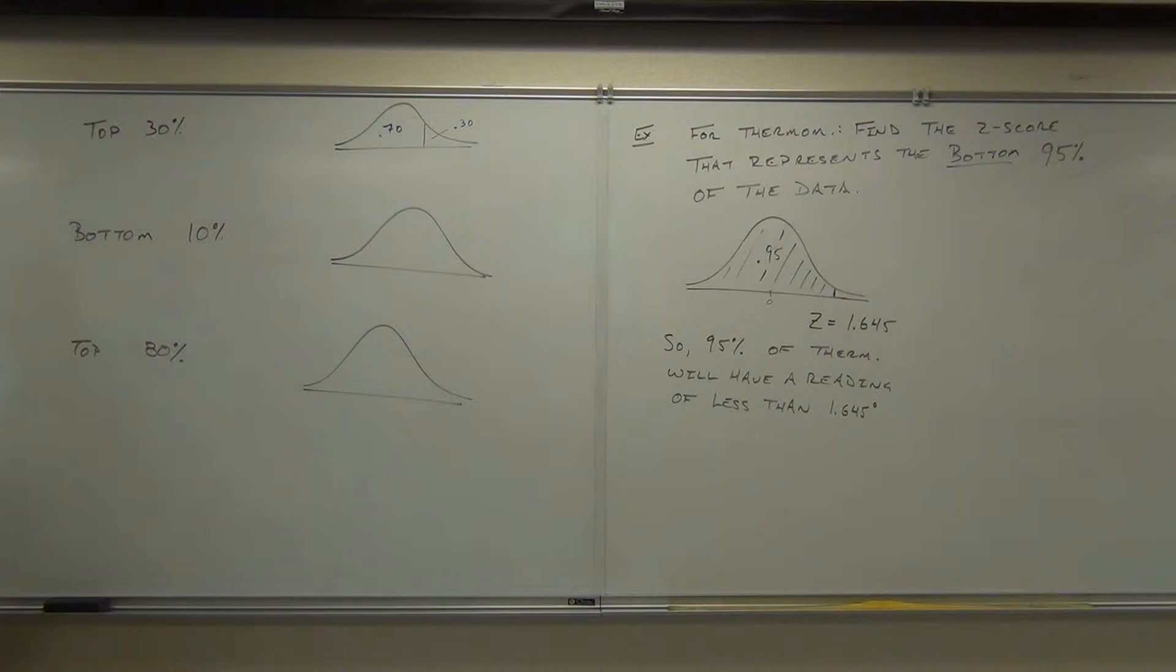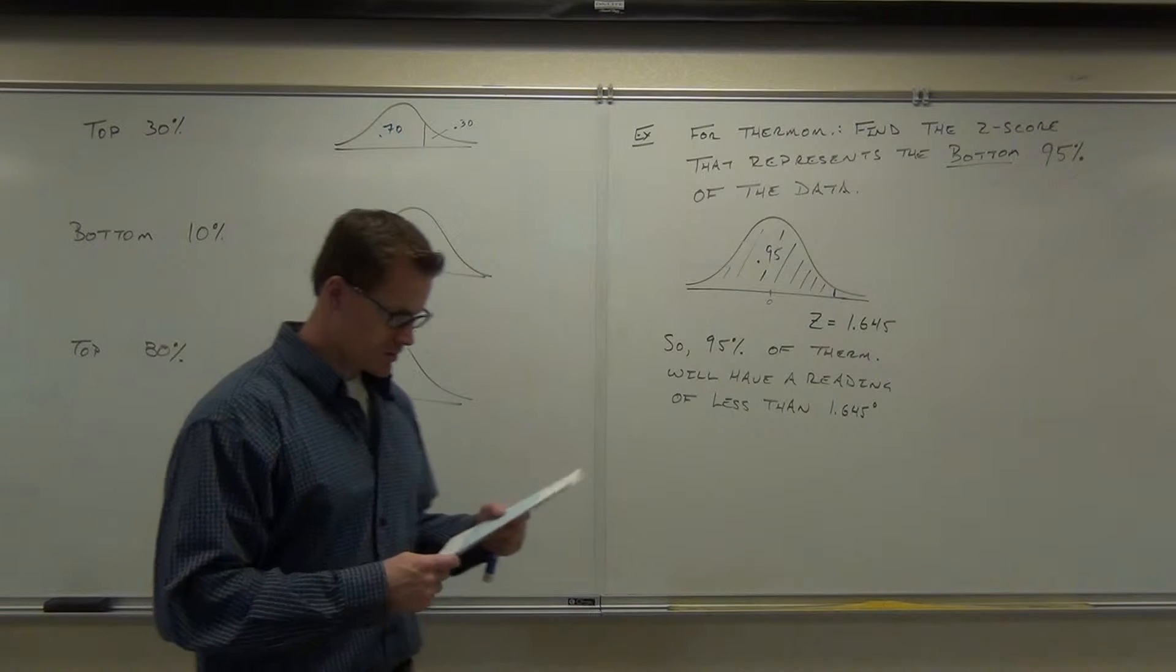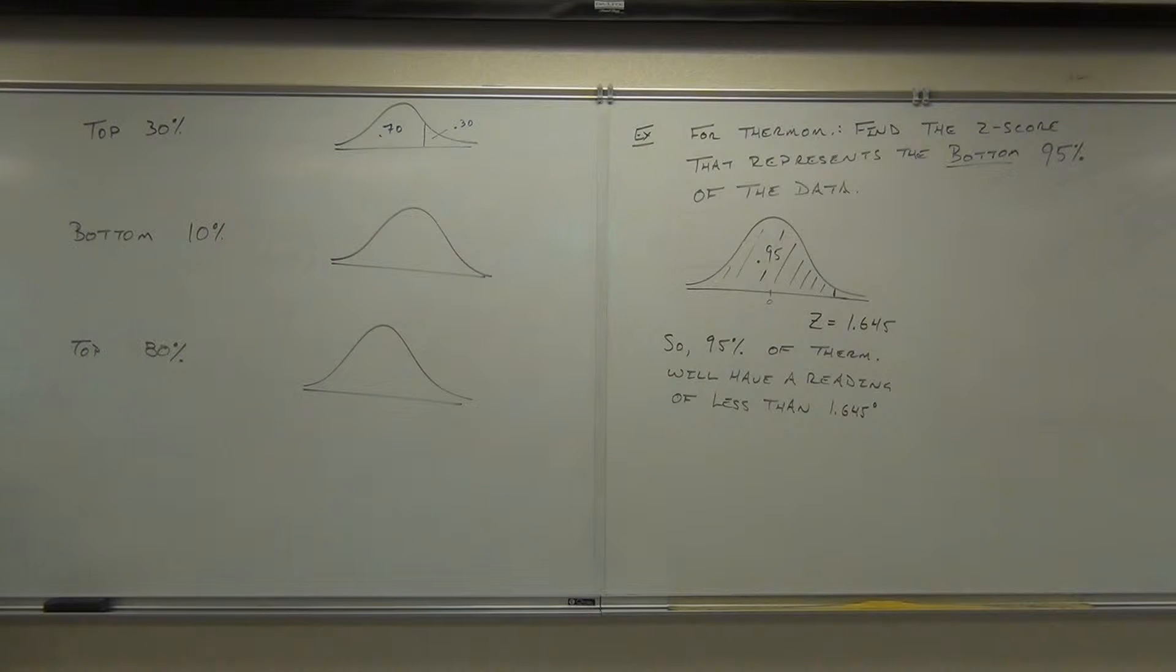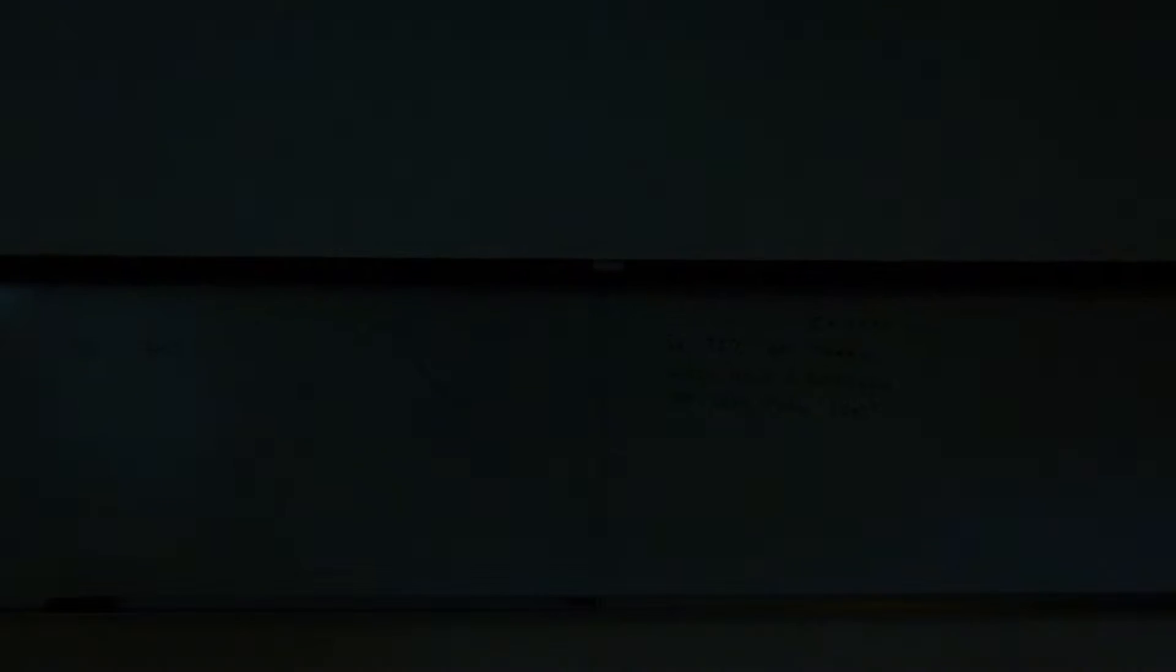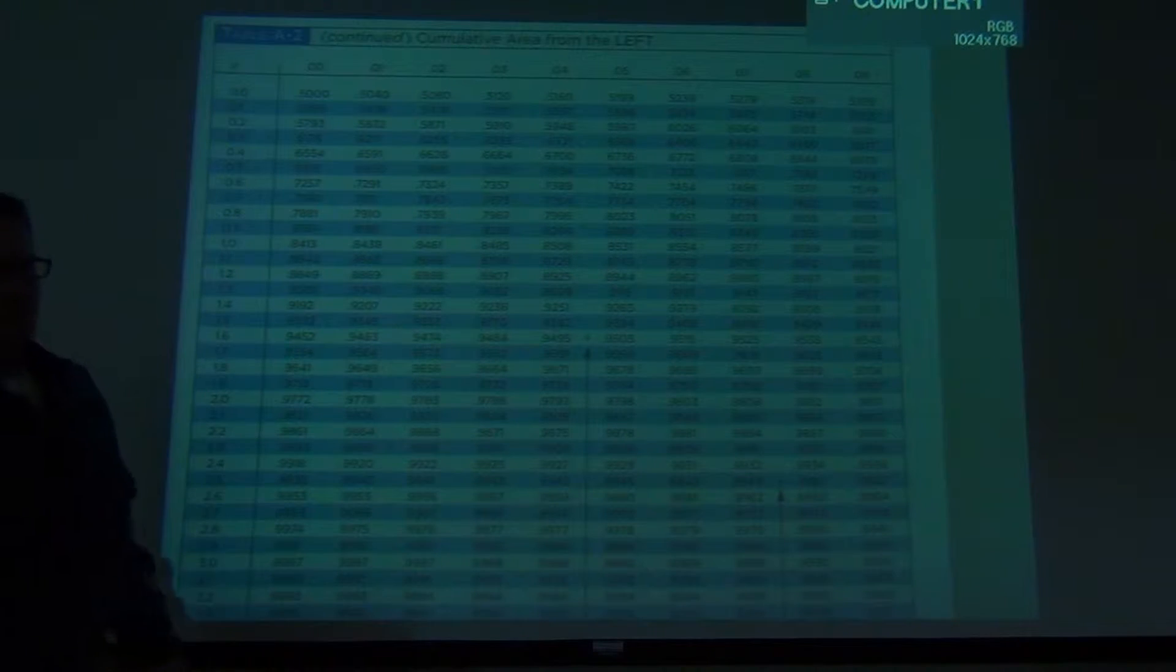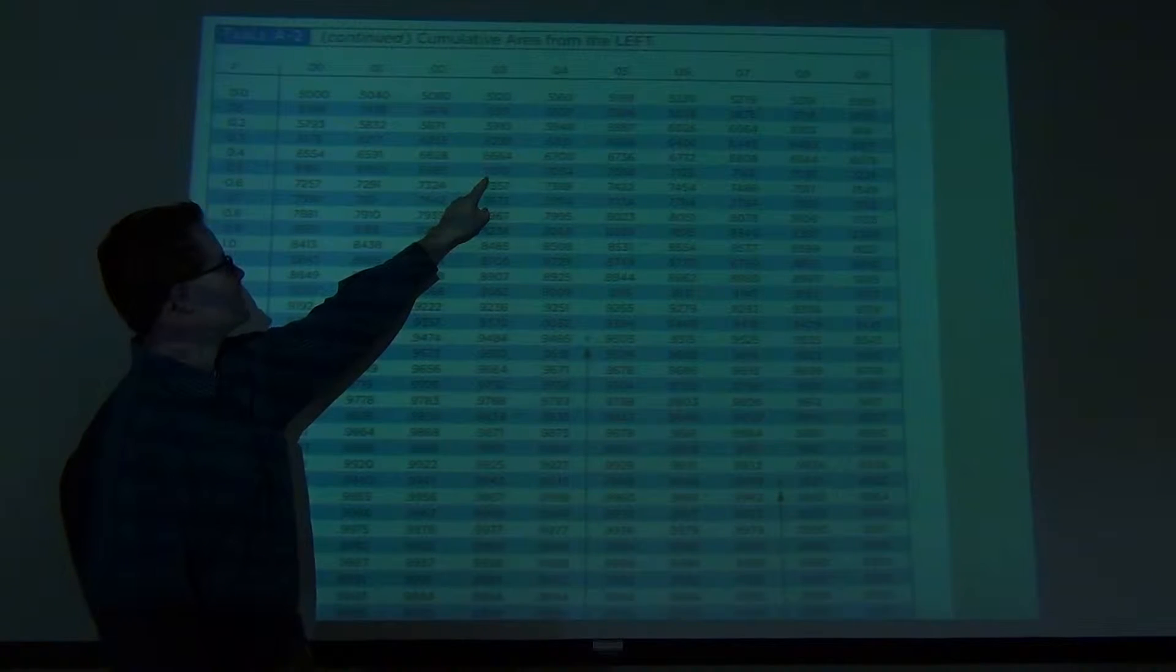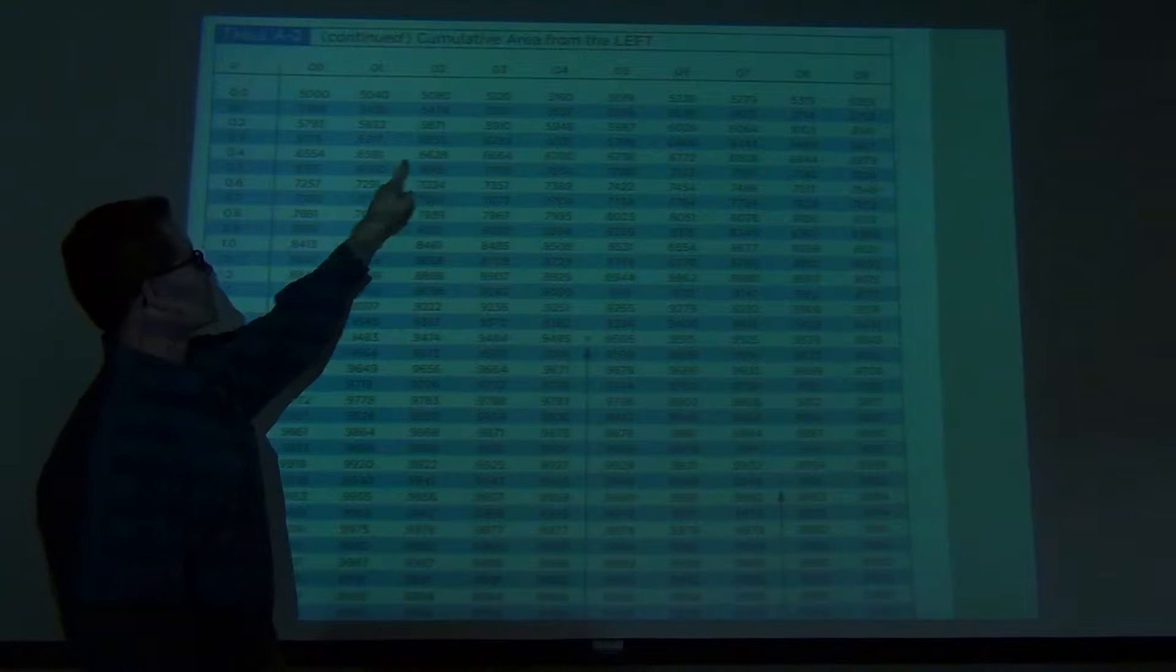Most likely, it's not going to be there. 0.7000. Oh my gosh. 0.7000. 0.53. Let's look at that together, okay? I do 0.7000. I don't see a 0.7000. I see a 0.6985, I see a 0.7019. It's somewhere between there, right? Which means your z-score is somewhere between 0.52 and 0.53. Do you follow me?